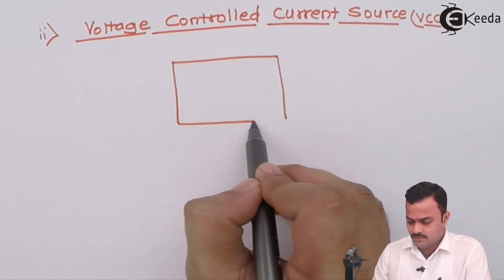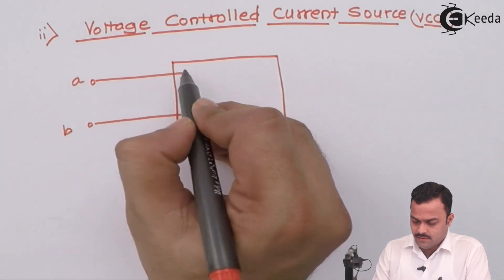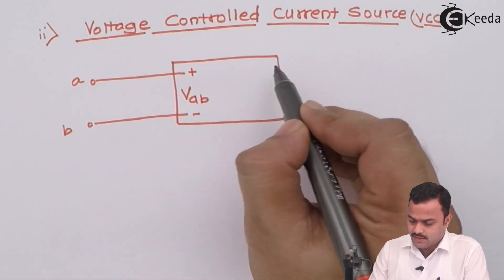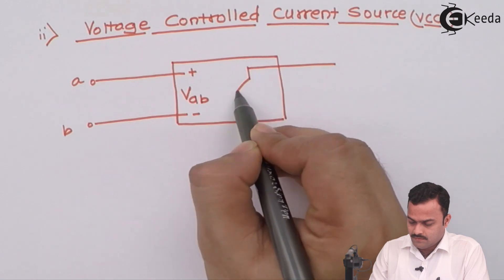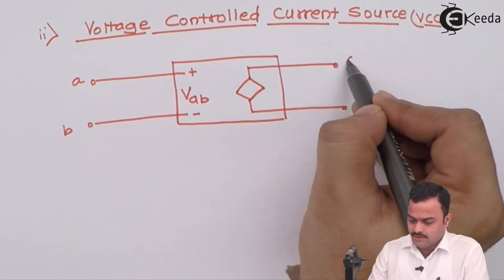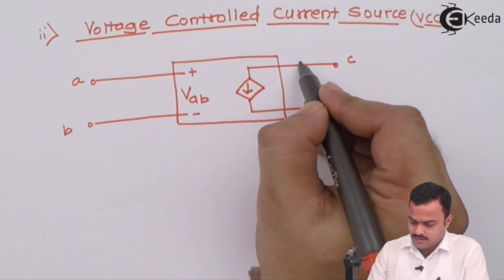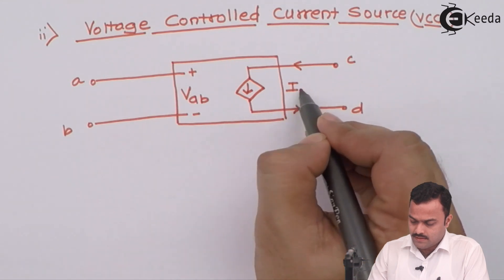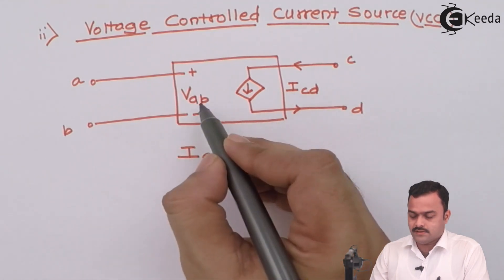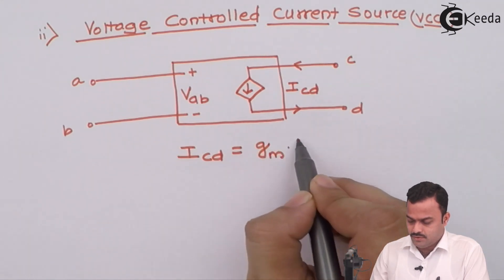So this is A and B having a voltage VAB. This voltage will control the current at the output side. And it is represented with a diamond shape just to interpret it is a dependent source. And being a current source it will have arrowhead. So this is a current which is nothing but ICD. And I can say this ICD depends on this voltage. And I can call this as GM into VAB, where GM is a constant.